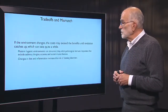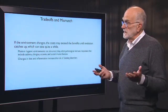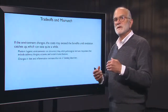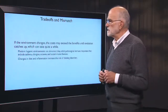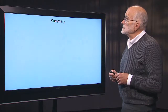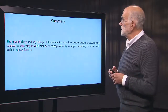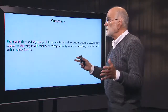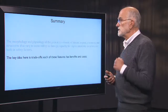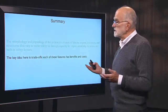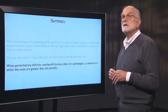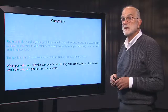Modern hygienic environments are abnormal — they elicit pathological immune responses such as asthma, allergies, eczema, and autoimmune disease. Those are all things that result when the immune system reacts abnormally to the historically abnormal lack of commensal organisms. Changes in diet and inflammation can also increase the risk of clotting disorders. To summarize: the morphology and physiology of the patient is a mosaic of tissues and organs and processes that vary in their vulnerability to damage, their capacity for repair, their sensitivity to stress, and their built-in safety factors. The key idea running through these issues is that of trade-offs — each feature has benefits and costs, and when perturbations shift the cost-benefit balance, they elicit pathologies: situations in which costs become greater than benefits.